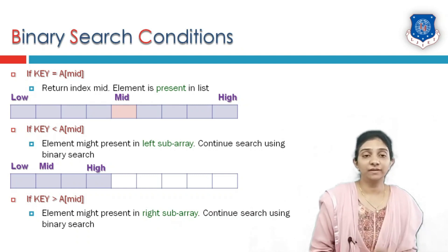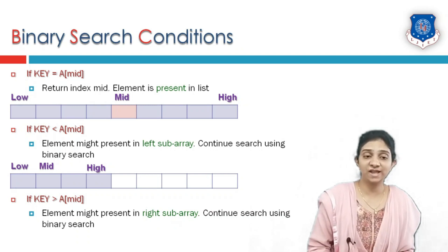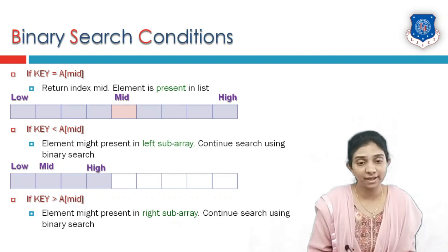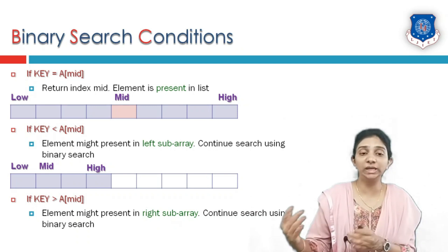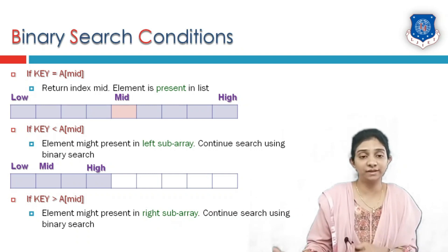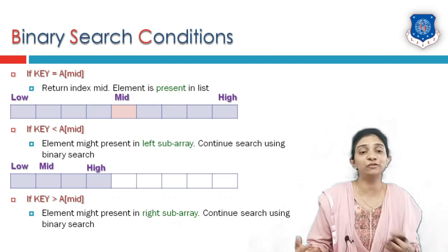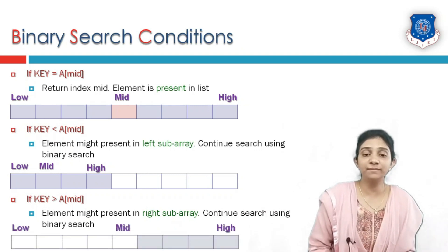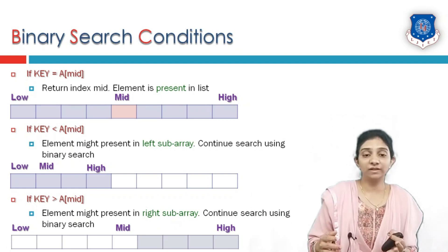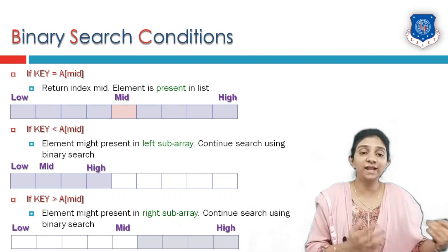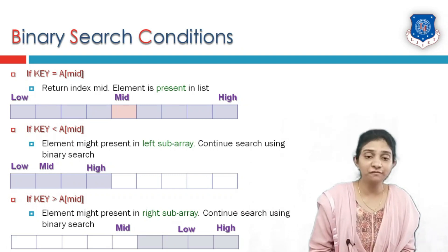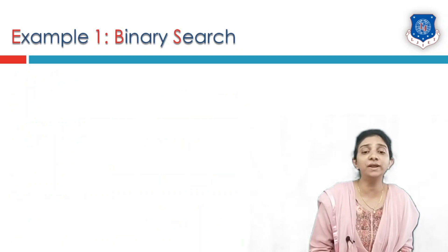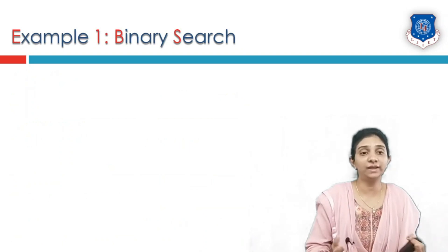The third case says that if the key element is not equal to mid and not lesser than mid, then the key element must be greater than mid. Elements towards the right of mid are greater than the mid element, and the key element is also greater than mid. So we try to search for the key element towards the right of the array. We shift our low index towards the right as mid plus 1, and re-calculate mid to continue the search.